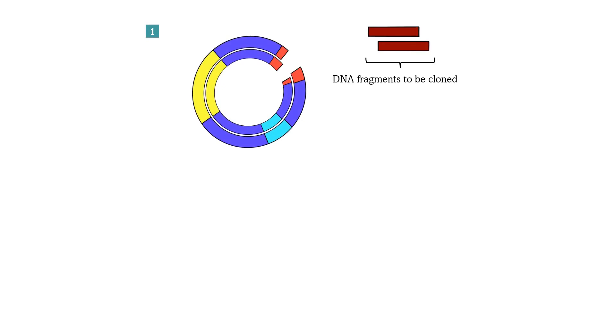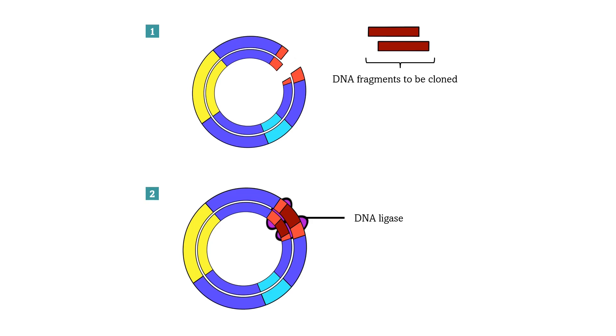Well, first, we cut both the plasmid DNA and the DNA we want to clone with the same restriction enzyme. DNA fragments are then inserted into the cloning vector together with DNA ligase, which you can remember from DNA replication.